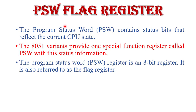What do you mean by PSW Flag Register? The Program Status Word register, or PSW Flag Register, contains the status bits that reflect the current CPU state. The CPU contains the ALU — the Arithmetic and Logic Unit — so the PSW Flag Register shows the current status of the ALU operation. In 8051 Microcontroller, the PSW Flag Register is considered a special function register containing status information. It is basically an 8-bit register, also referred to as a Flag Register.